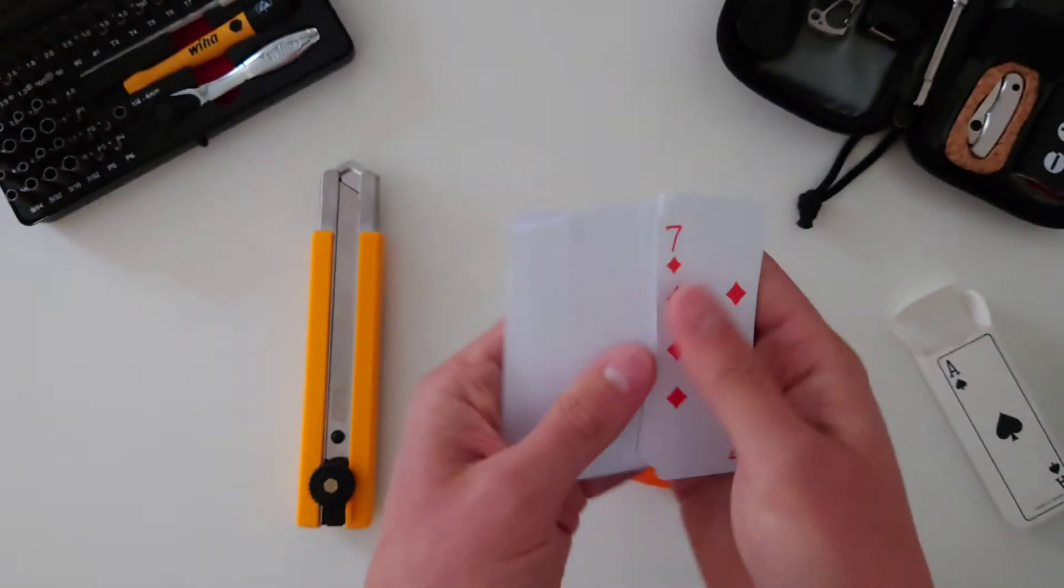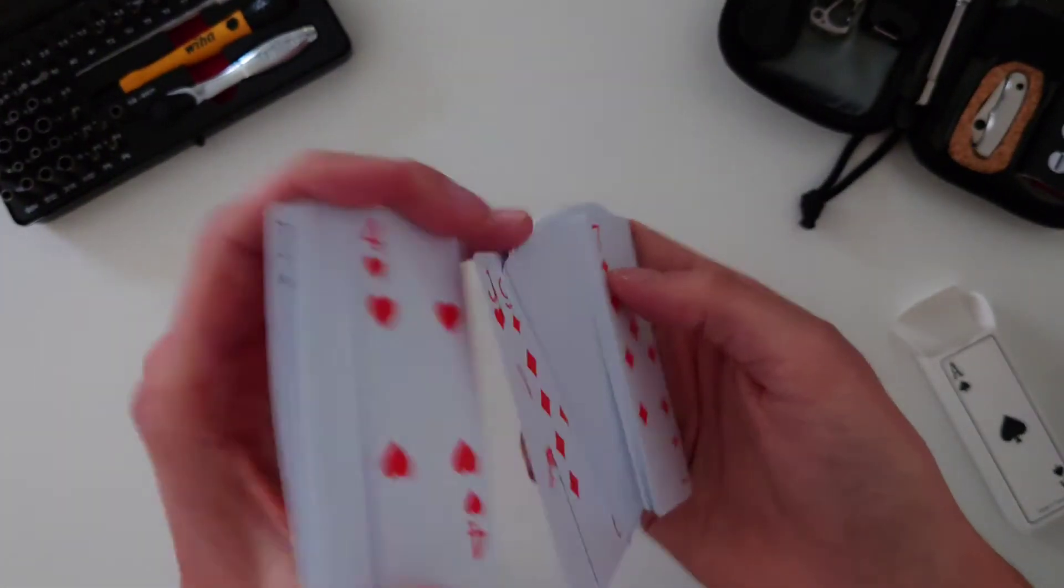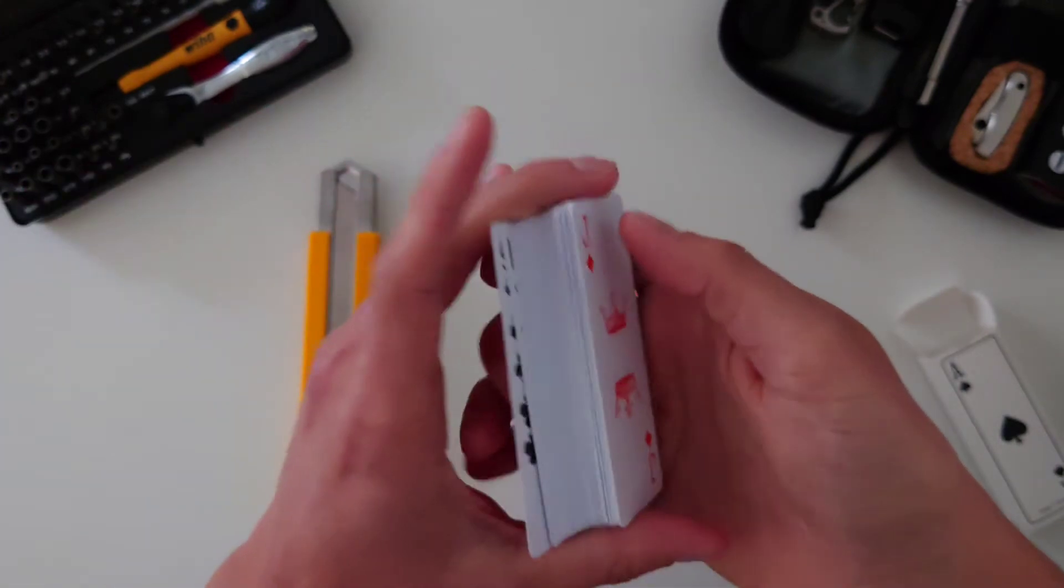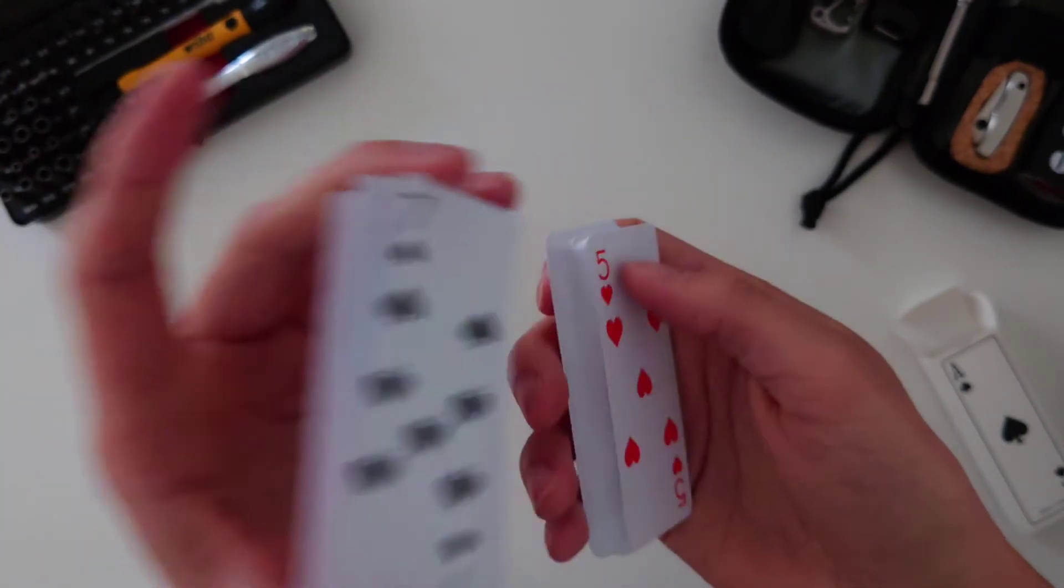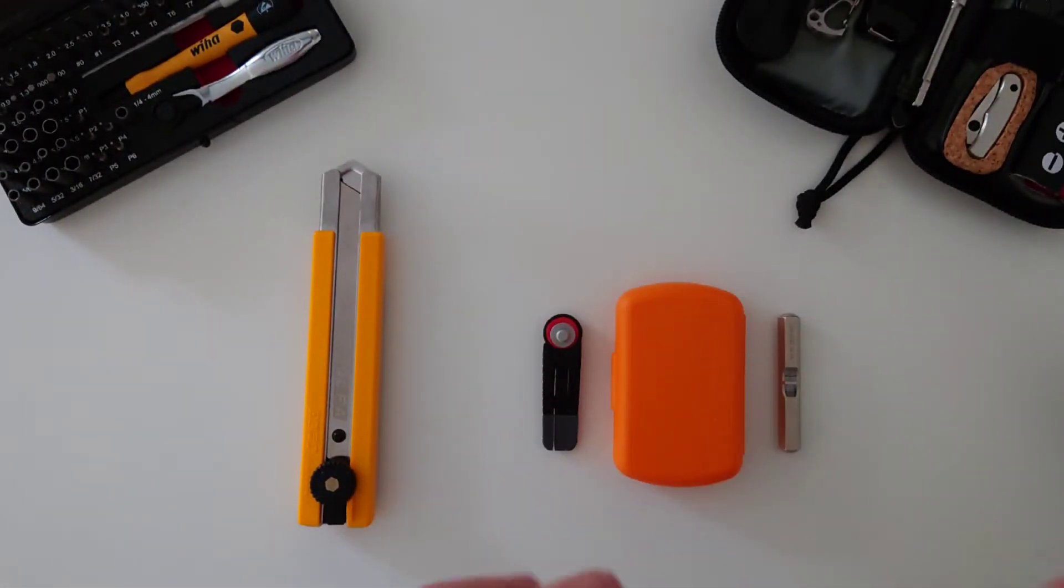So if you're playing a beer game and you manage to spill some beer on them, you can just run some soap and water over them and they'll be ready to go for the next game. I keep these in my backpack at all times just in case I want to play some games on the train or something like that.